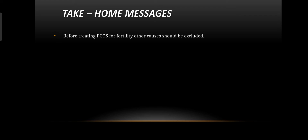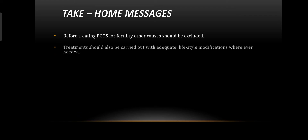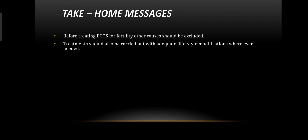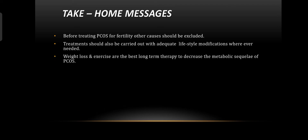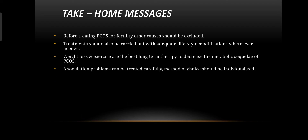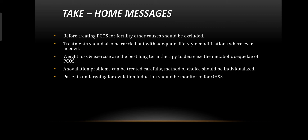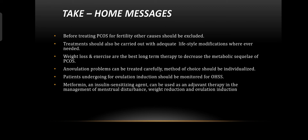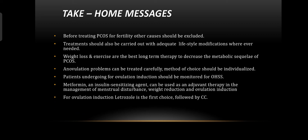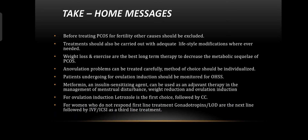Take-home message: Before treating PCOS for fertility, other causes should be excluded. Treatment should be carried out alongside adequate lifestyle modification. Where needed, weight loss and exercise are the best long-term therapy to decrease the metabolic severity of PCOS. Ovulation problems can be treated using individualized methods. Patients undergoing ovulation induction should be monitored for ovarian hyperstimulation syndrome. Metformin and insulin-sensitizing agents can be used as adjuvant therapy for menstrual disturbance, weight reduction, and ovulation induction. For ovulation induction, letrozole is the first choice, followed by clomiphene citrate. For women who do not respond to first-line treatment, gonadotrophins and laparoscopic ovarian drilling are the next line, followed by IVF or ICSI as the third-line treatment.